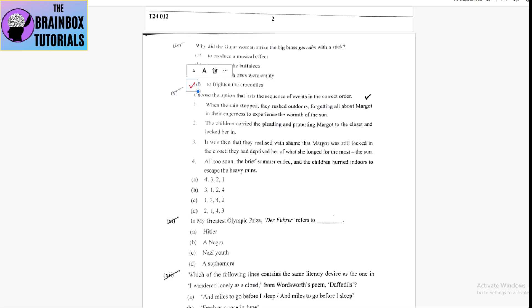Number 2, the children carried the pleading and protesting Margot to the closet and locked her in. Number 3, it was then that they realized with shame that Margot was still locked in their closet. They had deprived her of what she longed for the most, the sun.